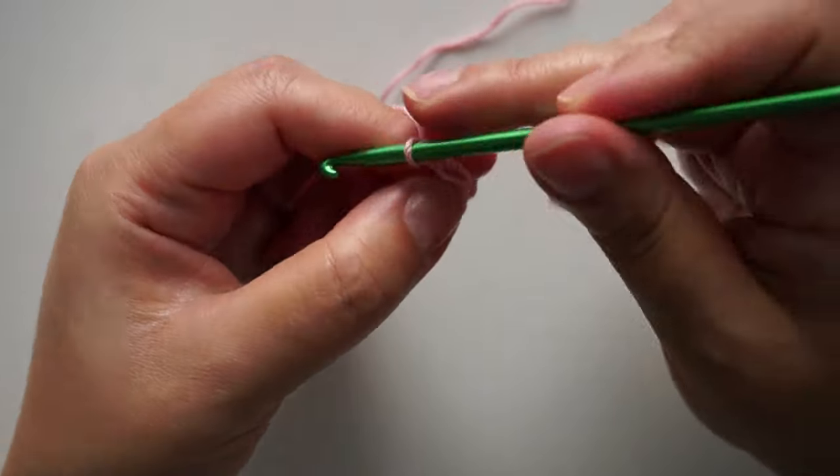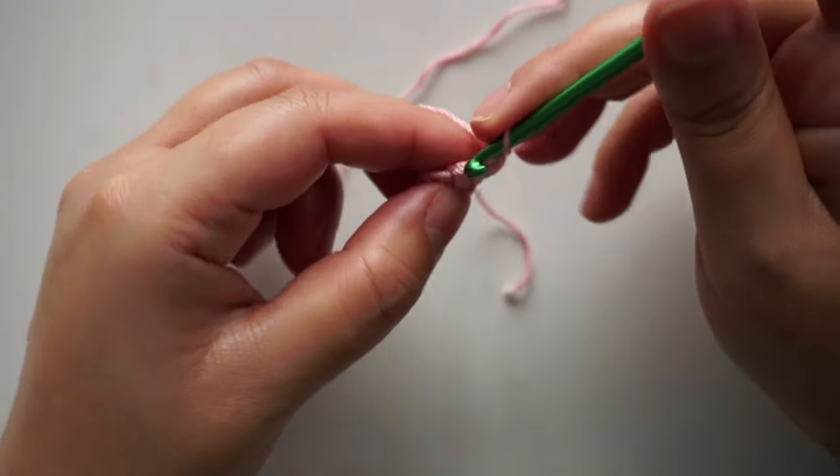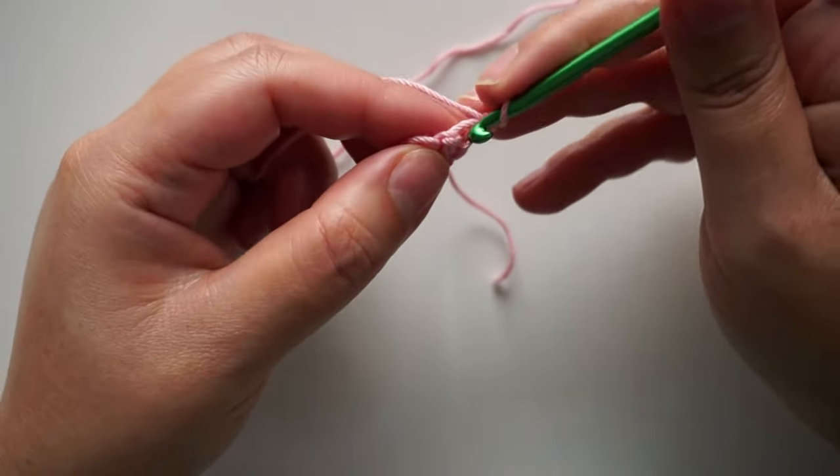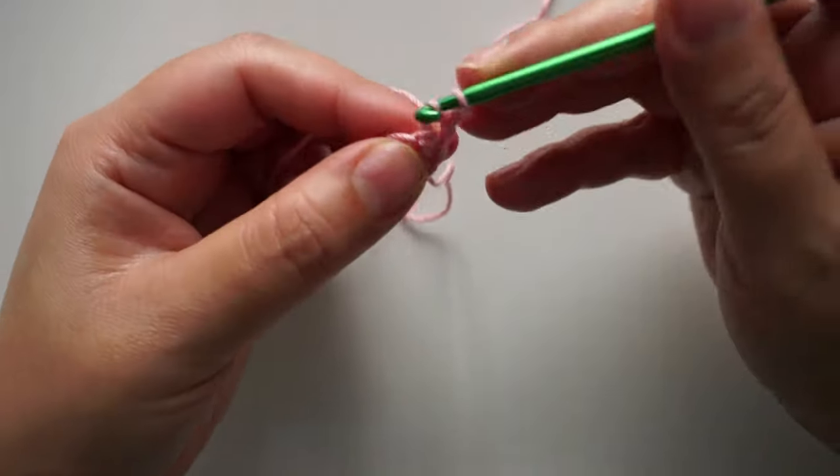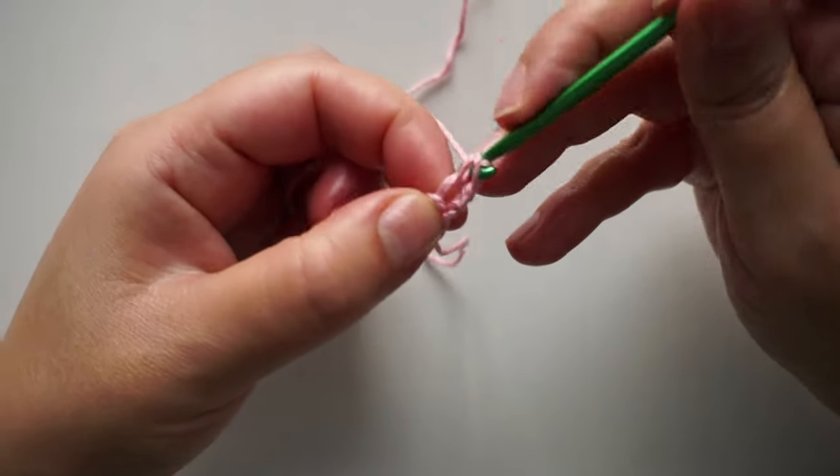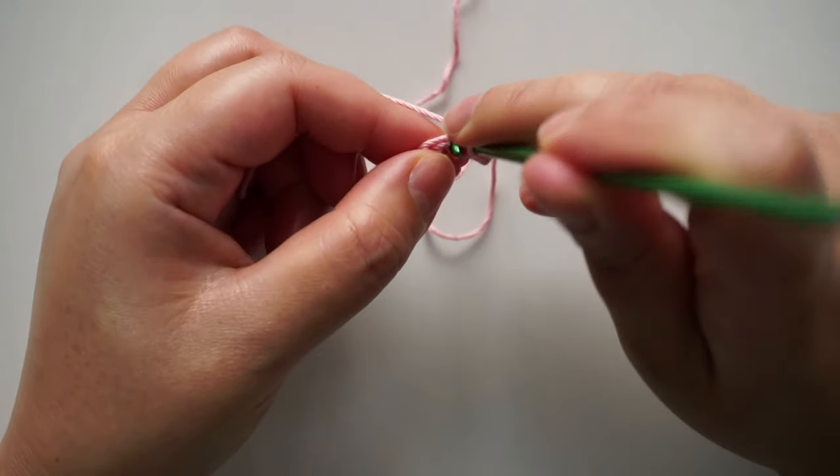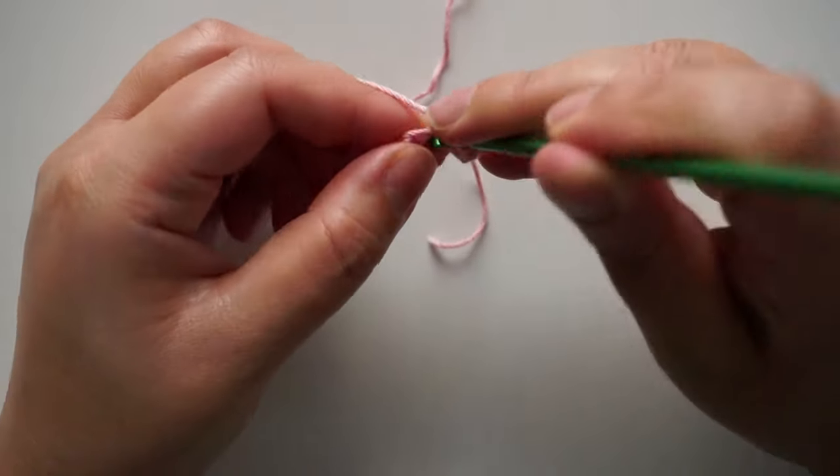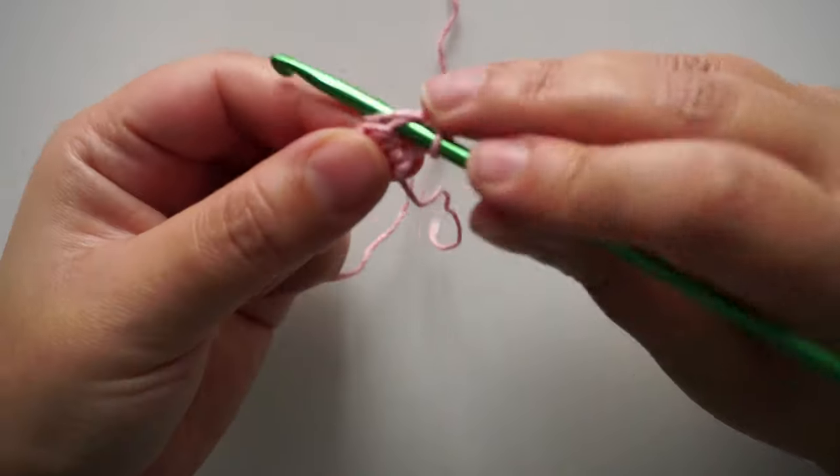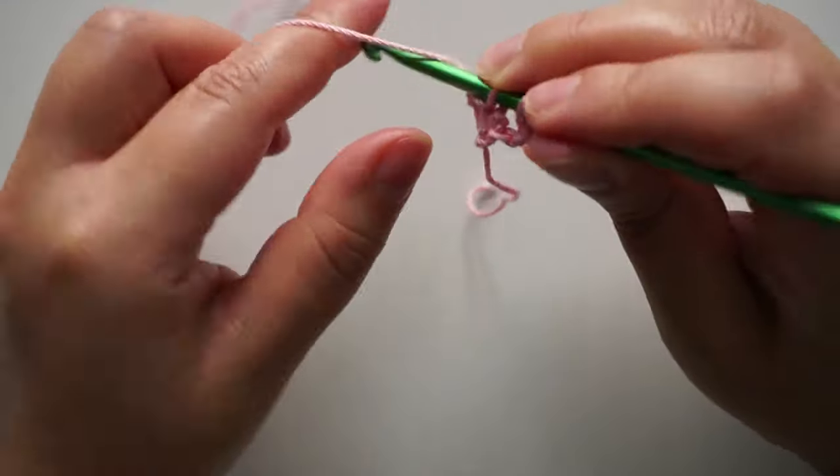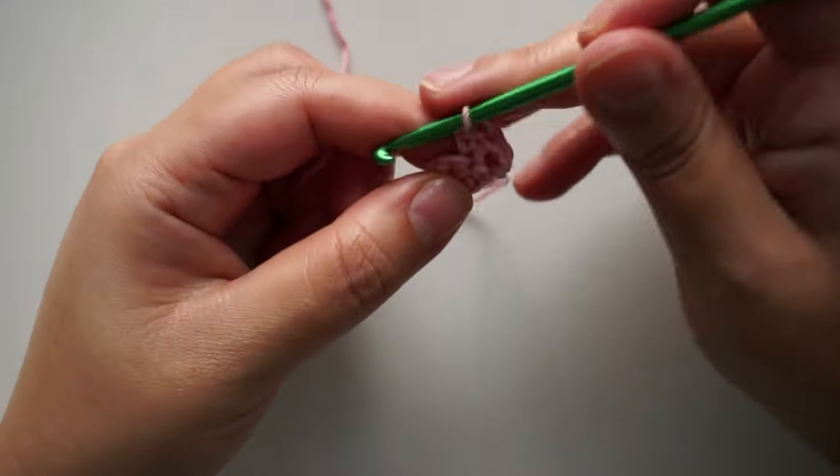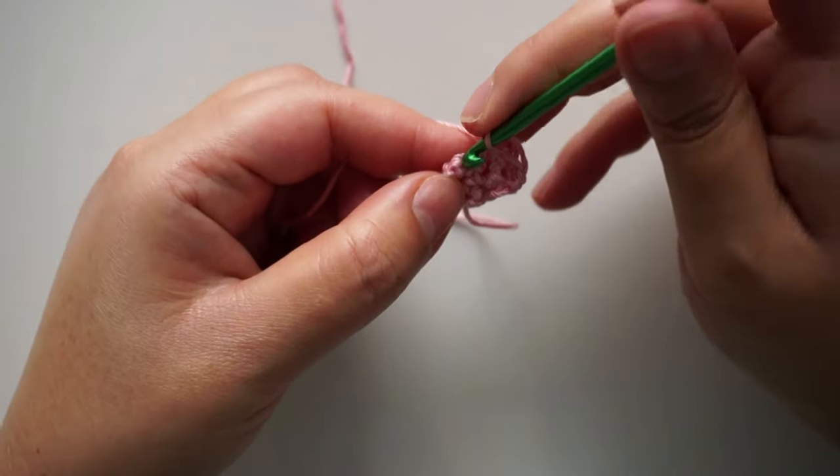I'll chain one again and turn. Now I have three stitches. So one single crochet in the first stitch. I'll chain one again. One single crochet in the next stitch and two single crochet in the last stitch.